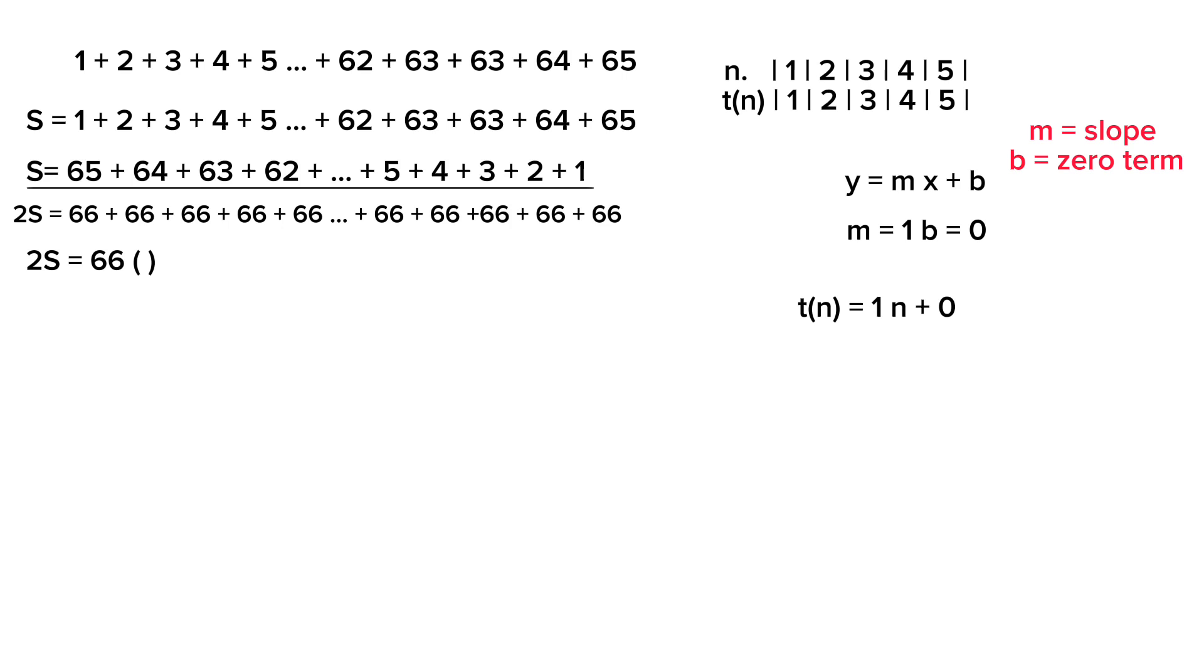And our x is the term number, n. And our b is 0, so that's plus 0. So the t(n) is equal to n.